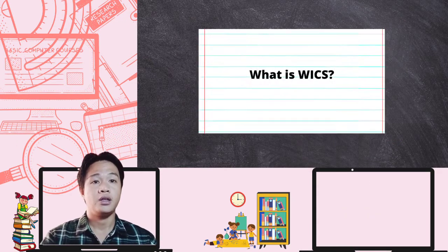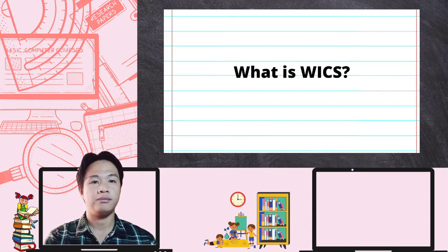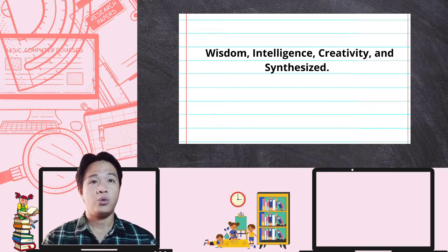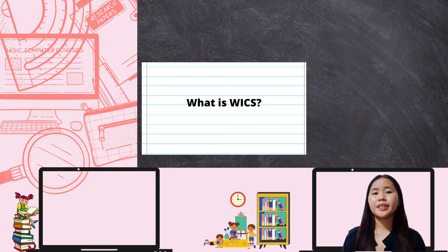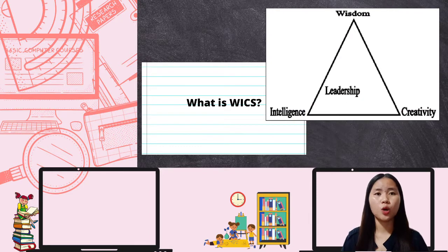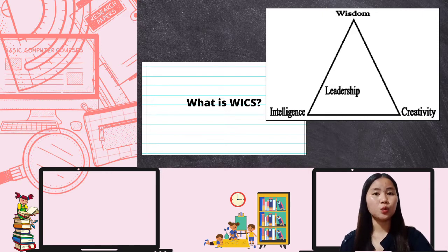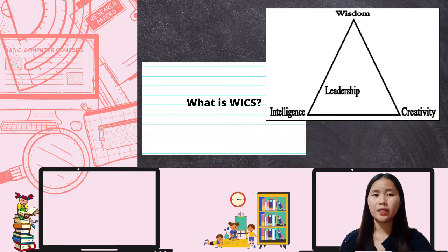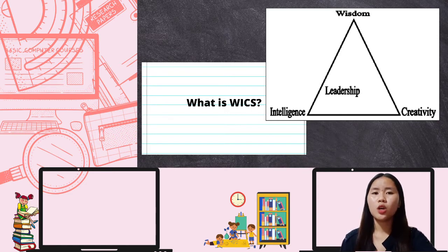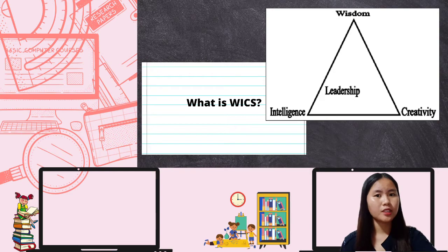WICS model stands for Wisdom, Intelligence, Creativity, and Synthesized. According to Sternberg, the basic idea of the WICS model is that citizens of the world need: creativity to form a vision of where they want to go and to cope with change; analytical intelligence to determine whether their creative ideas are good ones; practical intelligence to implement their ideas and persuade others of their value; and wisdom to ensure that ideas will help achieve an ethically based common good over the long and short terms, rather than just what is good for themselves, their families, or their friends.